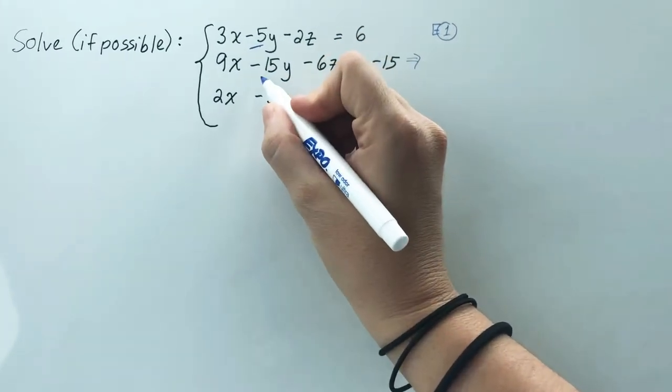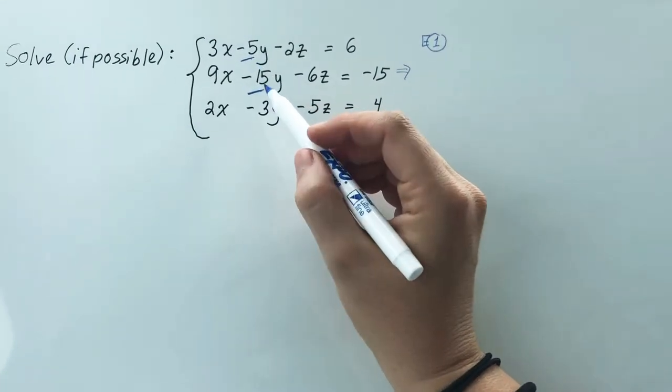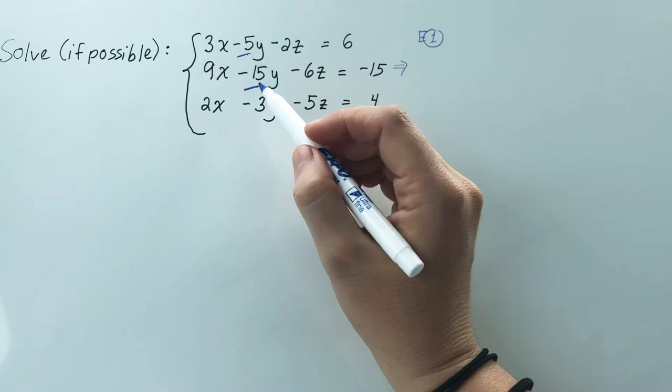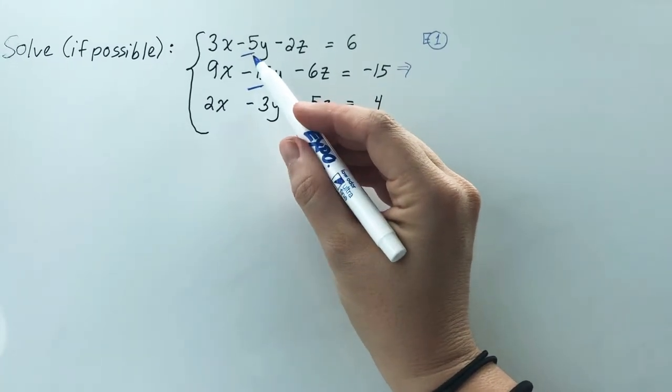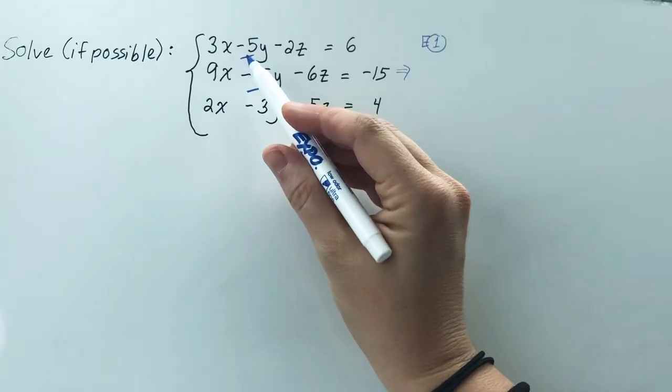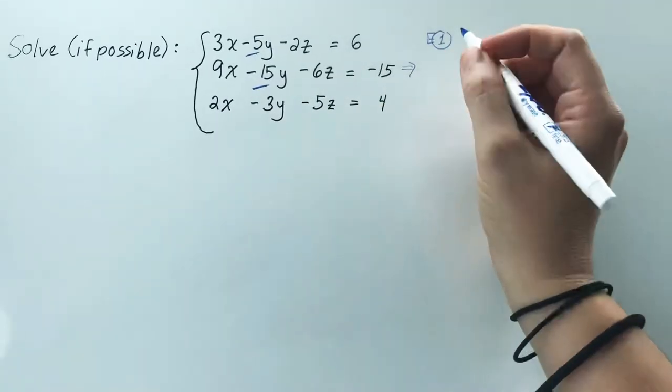If you look at equation 2 then, you have negative 15. So what would you need to multiply equation 1 by so that that negative 5 would cancel with this negative 15? Well, you'd want to make it a positive 15. So in order to make negative 5 turn into positive 15, you would need to multiply that equation by negative 3.